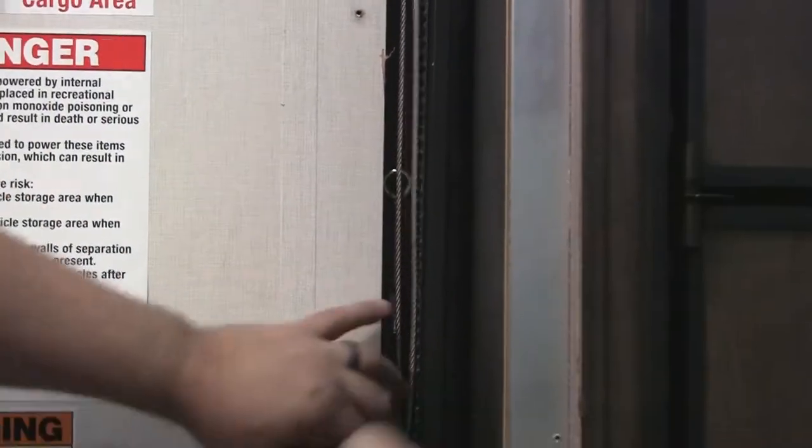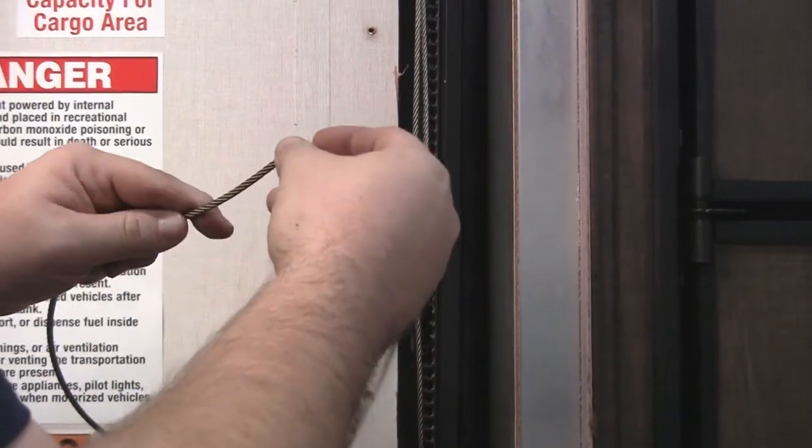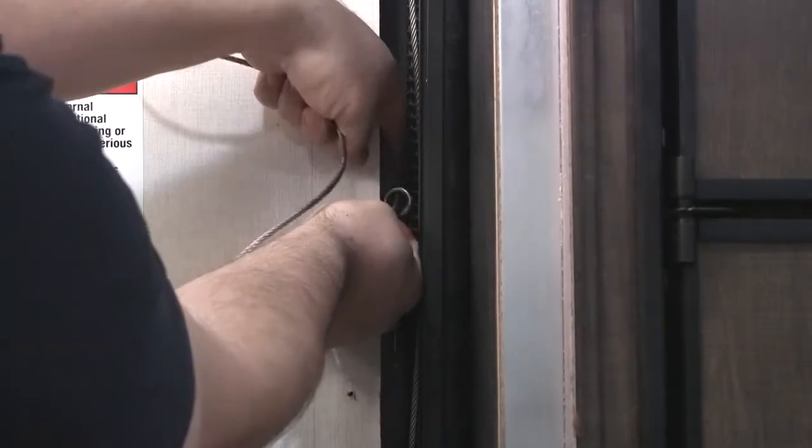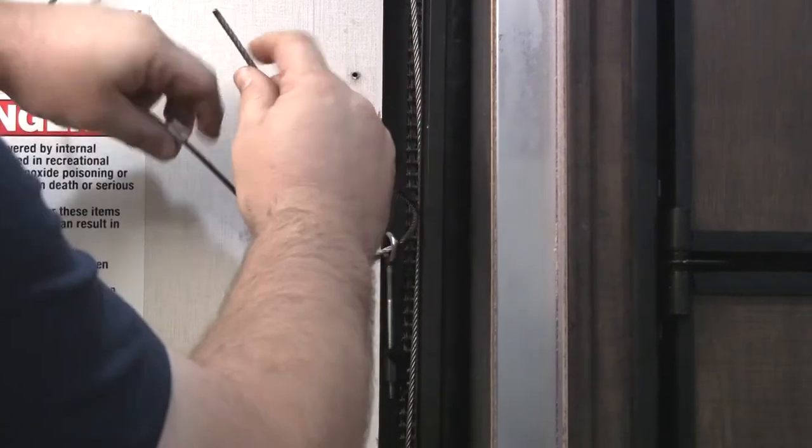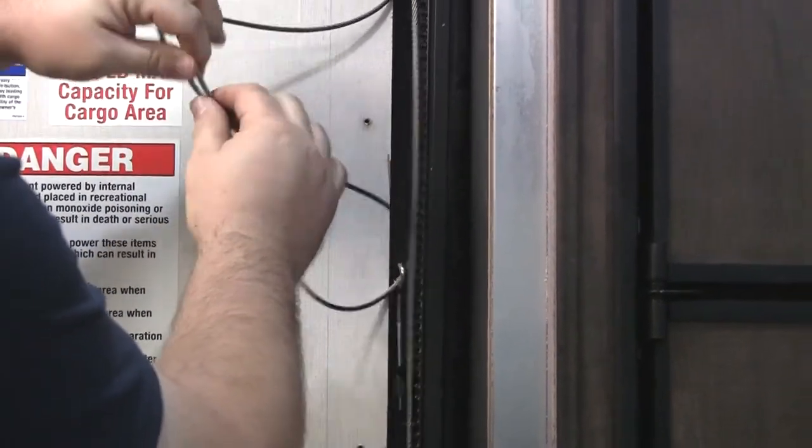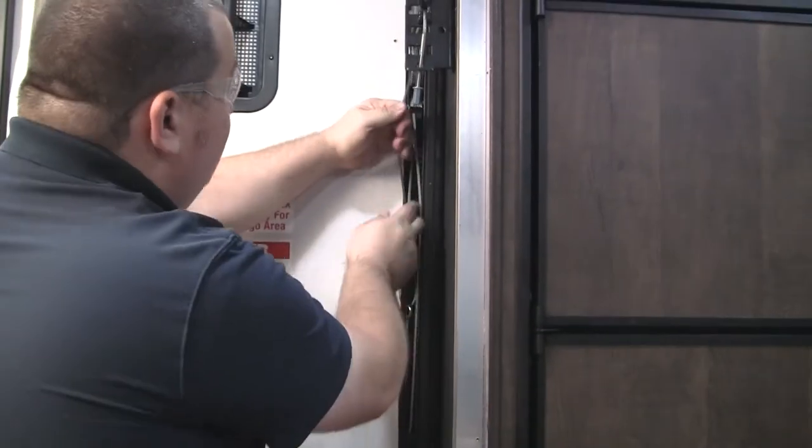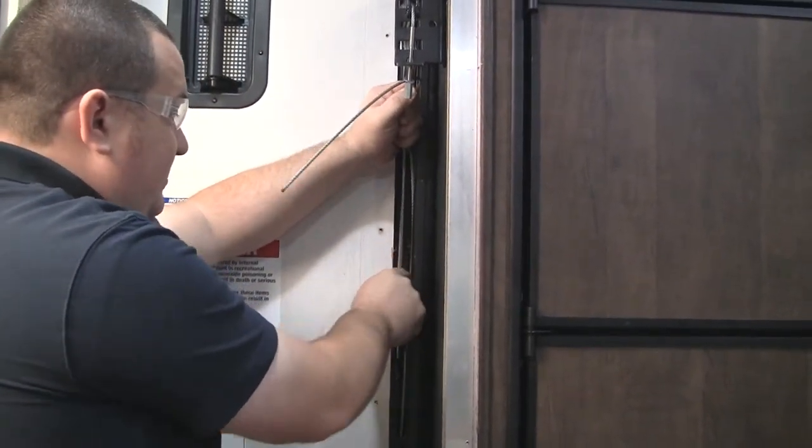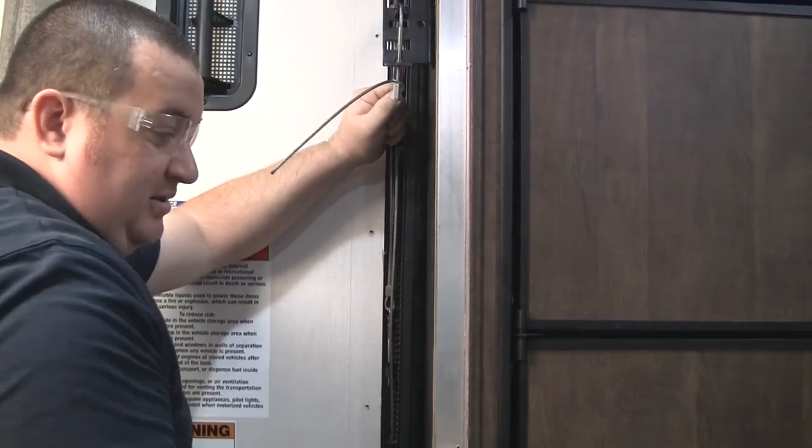Then you're going to take the ferrule. You're going to run the cable through one side of the ferrule, through the eye bolt, and then through the other side of the ferrule. And pull the cable as tight as you can. Get as much of the slack out of the cable as possible. You're going to create a loop about a half inch to an inch in diameter.